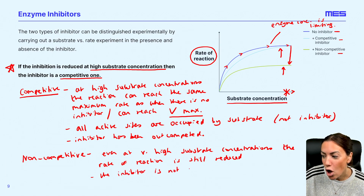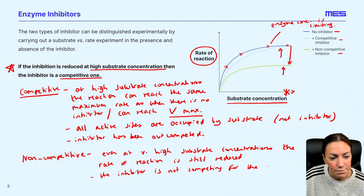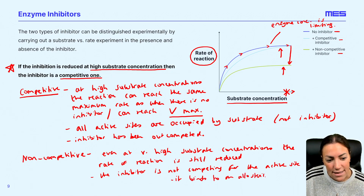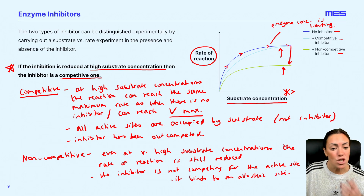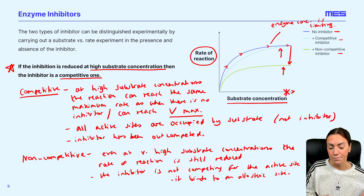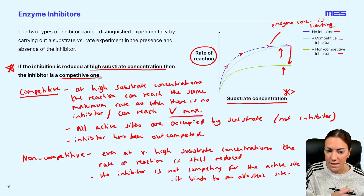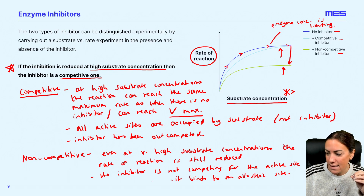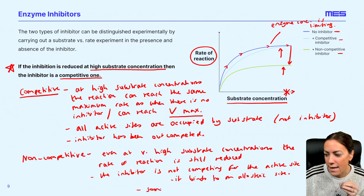This is because the non-competitive inhibitor is not competing for the active site — it binds to an allosteric site, so it is not in competition with the substrate. It's binding to an alternative, allosteric site on the enzyme. So no matter how much you increase the substrate concentration, some enzymes will always be inhibited.